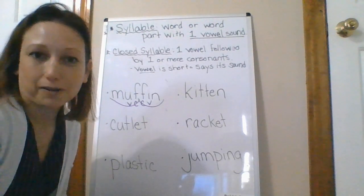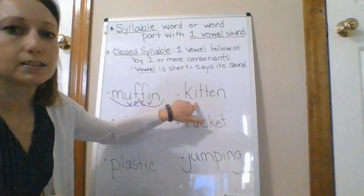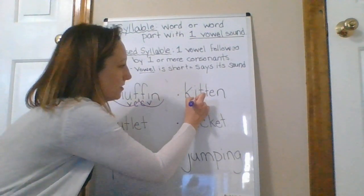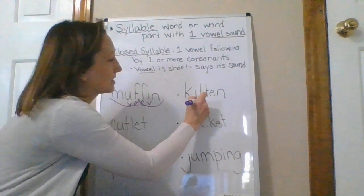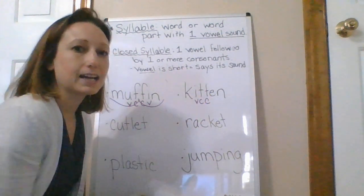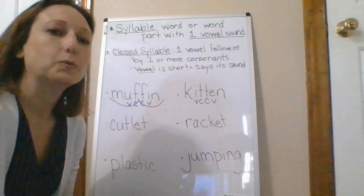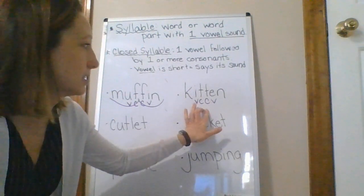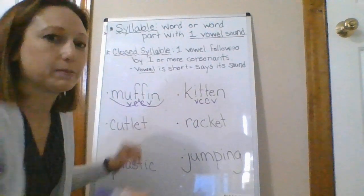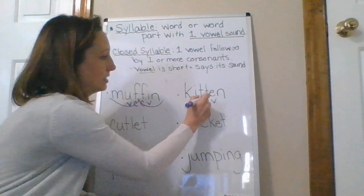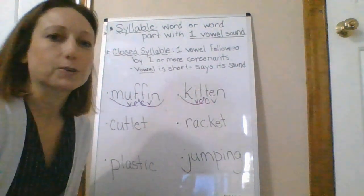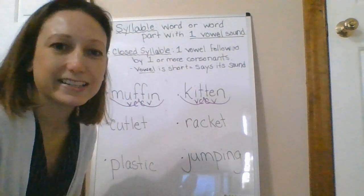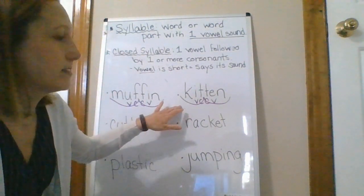So if I put them together, I have 'muffin.' You might eat a muffin for breakfast. Moving on to the next word — the I is our first vowel, T is a consonant, T is a consonant, and E is a vowel. Rabbit rule: when two consonants come between two vowels, we divide between the consonants. My first syllable is 'kit,' my second syllable is 'ten' — kitten.